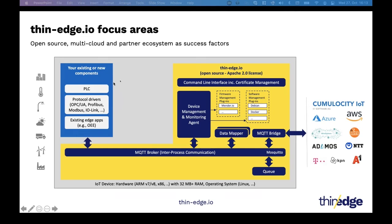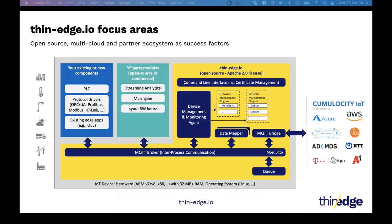Coming to the left side of the diagram, the ThinEdge components can co-exist and run next to other applications and components running on the device, which is usually the case. You can see on the left side some examples for software that might run on those devices: PLC runtimes, protocol drivers, or existing applications already deployed on the device. By using MQTT as inter-process communication, we also open up the capability to deploy additional services or modules on the device, such as streaming analytics engines or machine learning components that can interact over MQTT with other services and also the cloud or IoT platforms.